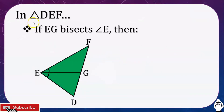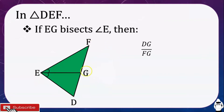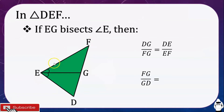Let's have another one. In triangle DEF, if EG bisects angle E, it divides DF into two segments DG and GF, which are proportional to the other two sides of the triangle, DE and EF. Then DG over FG is equal to DE over EF. Or FG over GD is equal to FE over ED. Those are the proportions we can use. That is all about TABT.